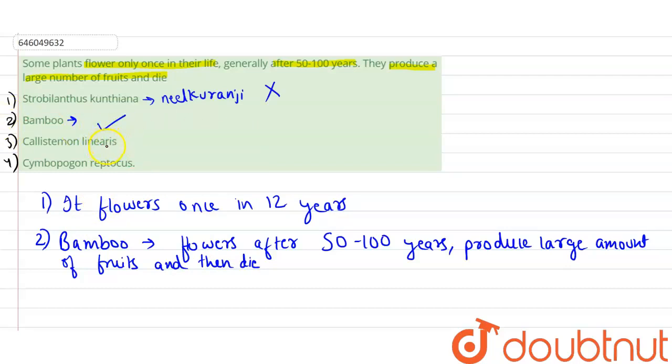Option third is Calistemon linearis. Now Calistemon linearis shows a normal type of flowering pattern, not a specific or unique one.